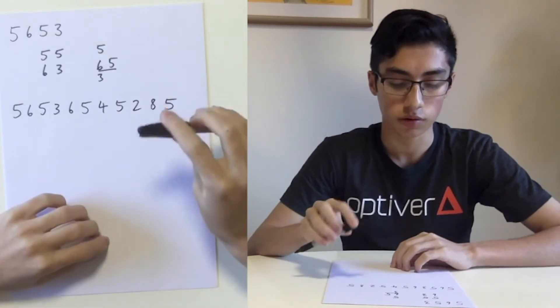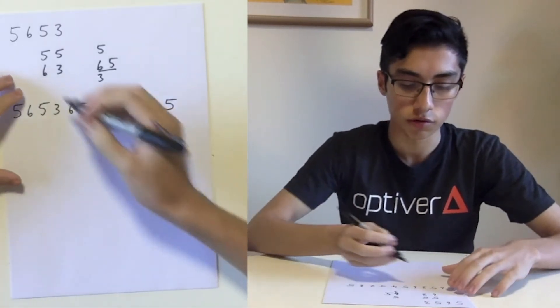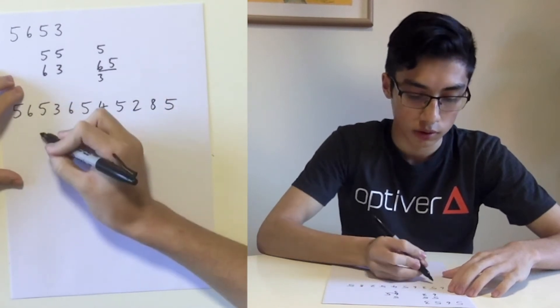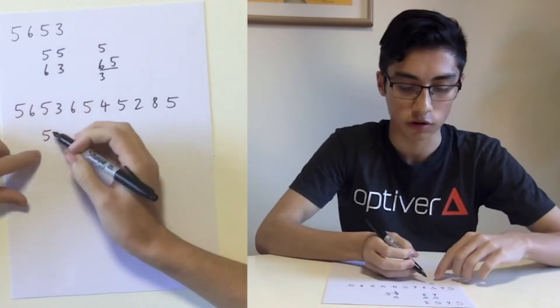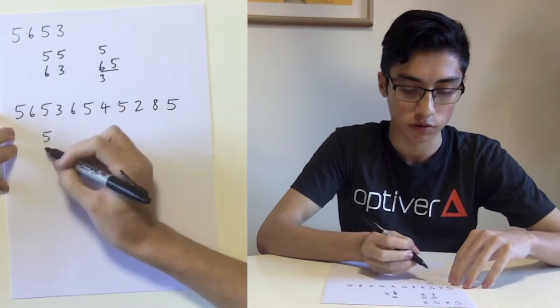One observation is that often moves are forced. For example, the first two moves are forced. We had to put down a 5, of course, and then our 6 could not be added to the existing 5, so we had to start a new list.